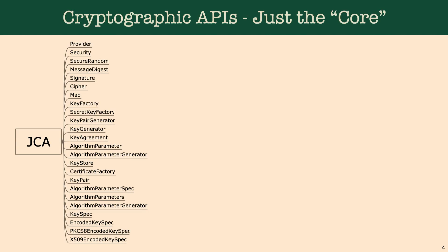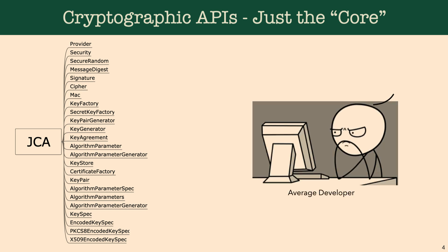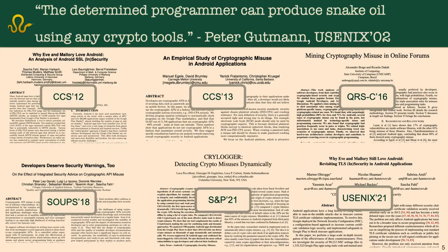When you talk about cryptographic APIs, there are a lot of them and they can confuse an average developer because they can be diverse and complex. As we have seen in previous works, it's really easy to mess things up when you are trying to use cryptographic APIs, because if you don't know what you're doing you might actually introduce more vulnerabilities in your code.